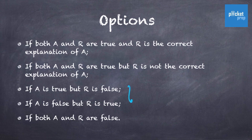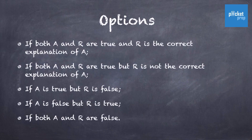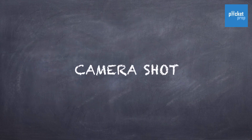If the answer lies in between these three options, you can figure it out easily by identifying whether the assertion or reason is true or false. But for options 1 and 2, when both Assertion and Reason are true, insert or apply 'because,' 'due to,' 'so that,' or 'that's why' after the Assertion statement. Check whether the Assertion and Reason are related — then option one is the correct answer. If Assertion and Reason are not appropriate, then option two is the right answer. You may find it confusing but once you solve a couple of questions, you will feel a lot better.